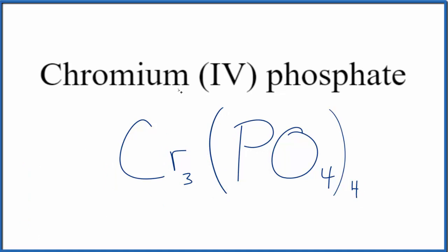So that makes this the formula for chromium (IV) phosphate, Cr3(PO4)4. But let's check our work real quick. We said we had 4+ on the chromium, each chromium here because of this Roman numeral. And then we said the whole phosphate is 3-. 4 times 3-, that's 12-. 3 times 4+, that's 12+. These two numbers, they add up to 0, give us a net charge of 0.